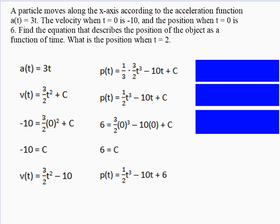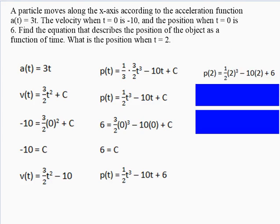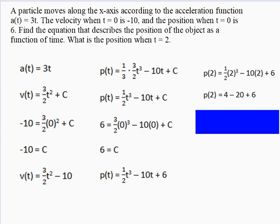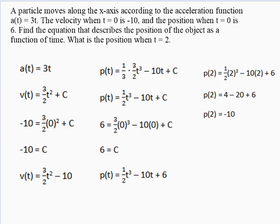That gives us our position function. The question asked us to find the equation describing position as a function of time, and also the position when t = 2. We plug 2 in for t, simplify, and get negative 10. So the position on the x-axis after two seconds is negative 10.